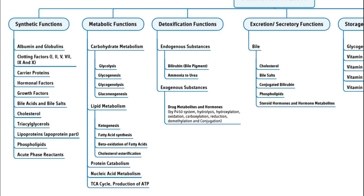Metabolic functions: almost all metabolisms occur in the liver — carbohydrate metabolism, protein, nucleic acid metabolism, and production of ATP. Detoxification functions include both endogenous substances like ammonia and bilirubin, and exogenous substances like drug metabolites and hormones. The systems involved include P450 systems, hydrolysis, hydroxylation, oxidation, and carboxylation reactions.